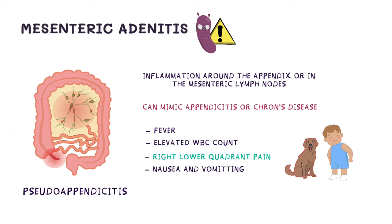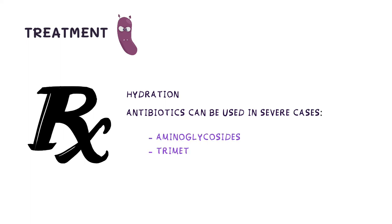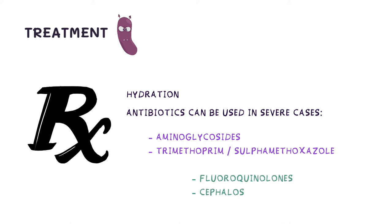Common post-infectious sequelae are reactive arthritis in adults and erythema nodosum. For treatment, it is mostly supportive, and the goal is to keep the patient hydrated. In severe cases, antibiotics such as aminoglycosides or trimethoprim-sulfamethoxazole can be used. Alternatively, fluoroquinolones or cephalosporins can be used to treat this infection.